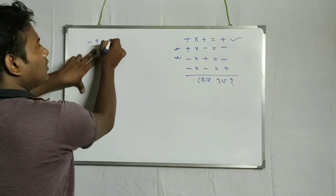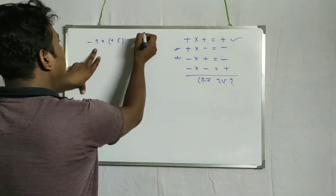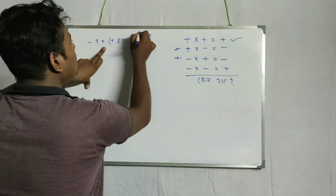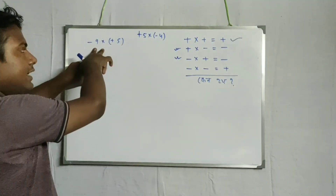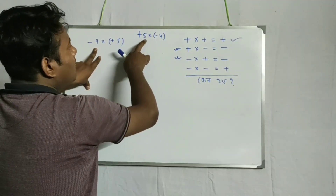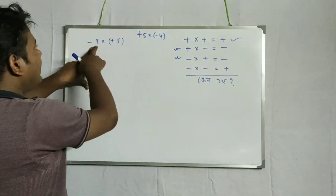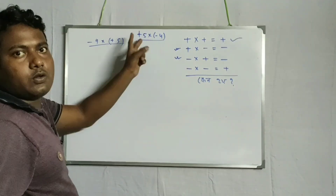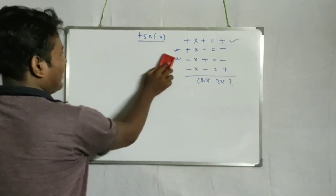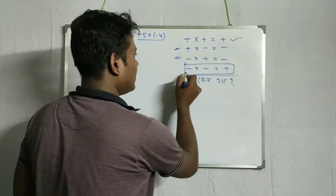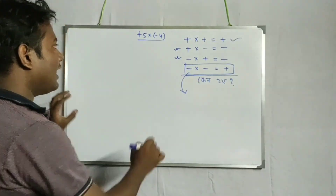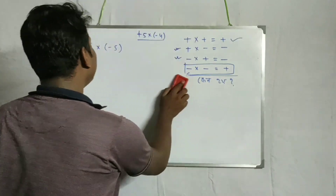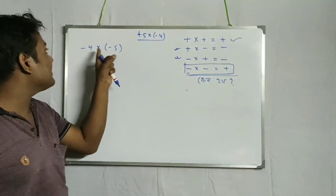Minus 4 into plus 5 — again, minus 5 into plus 5 into minus 4. So plus 5 into minus 4. This is the equation like minus 4 into minus 5, or minus 5 into minus 4.